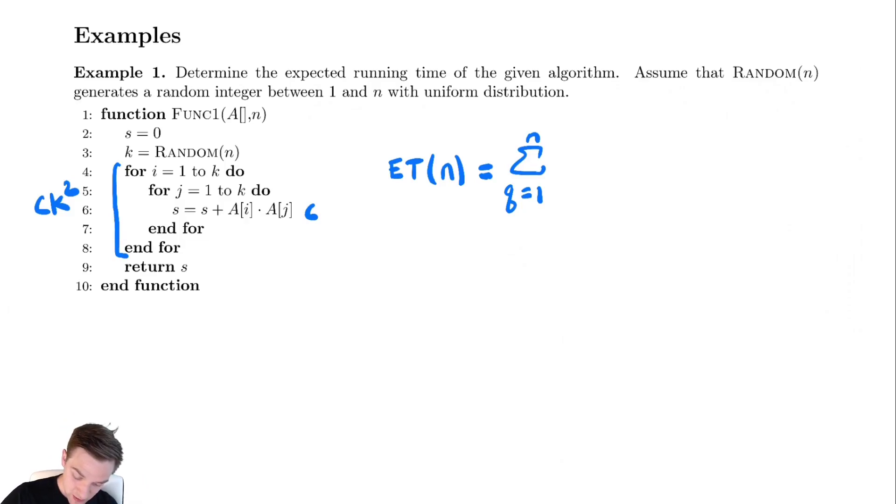So, we want to know what is the runtime when k, our random thing, is actually fixed at a value q, and what is the probability that we actually obtain that k is equal to that value q. Every single expected runtime problem we will look at, you should start by thinking about attacking it this way. This is the formal definition, and we will see where this takes us.